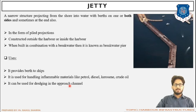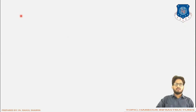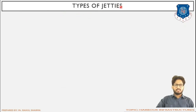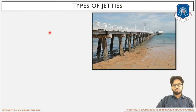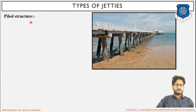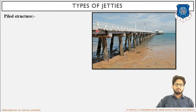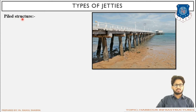Now for the types of jetties. First is the pile structure. End bearing piles transfer the load from the top to the seabed or bottom. The pile structure may be a vertical structure or an inclined structure — inclined members are called struts.